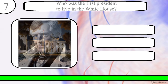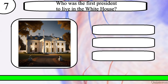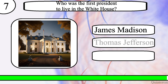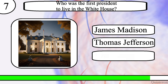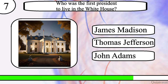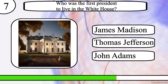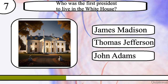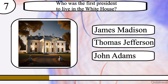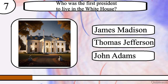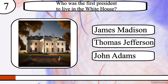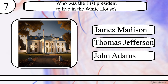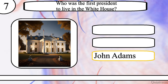Question 7. Who was the first President to live in the White House? James Madison, Thomas Jefferson or John Adams? The correct answer is John Adams.